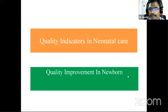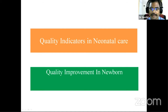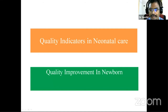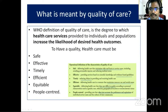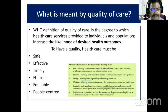Good evening to everyone. In the next 10 minutes we are going to discuss about quality indicators, their implications, and quality improvement. First of all, we must know the WHO definition of quality of care: healthcare provided to individuals and populations that increases the likelihood of desired health outcomes. To have quality, healthcare must be safe, effective, timely, efficient, equitable, and people-centered.